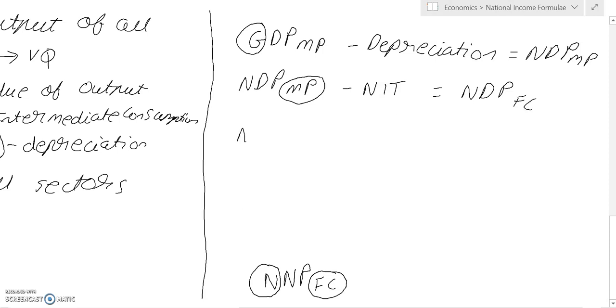Once we have NDP at FC or net domestic product at factor cost, we need to convert domestic into national. And that can be done by adding net factor income from abroad. So NDP FC plus NFIA gives you NNP at FC.